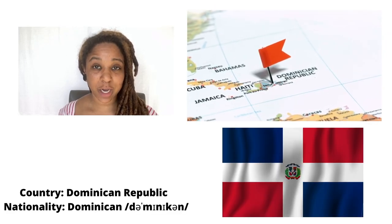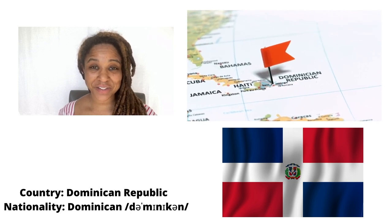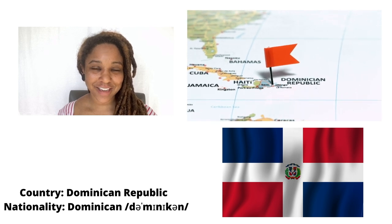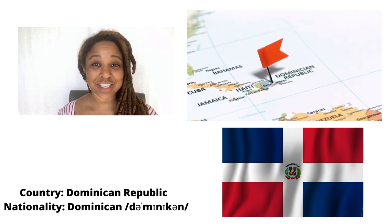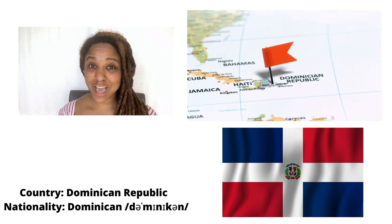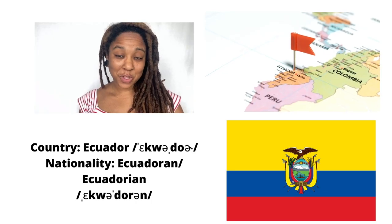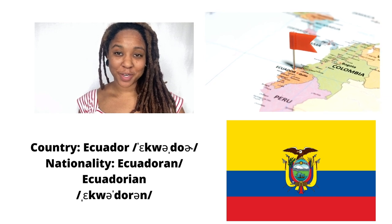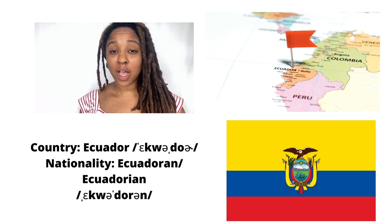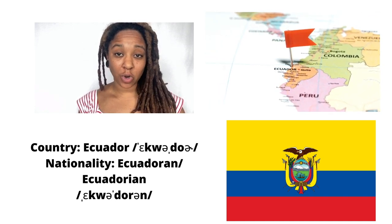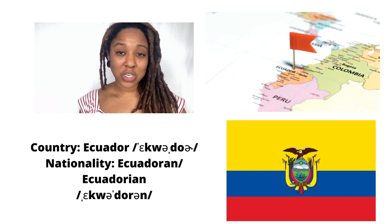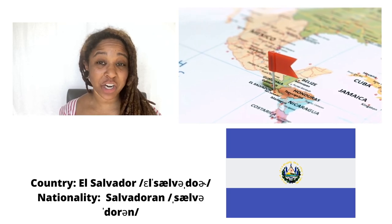Next we have the Dominican Republic. People from the Dominican Republic are also called Dominican — notice it looks like our previous island nation 'Dominica' but the demonym is pronounced differently. Another South American country: Ecuador. People from Ecuador are called Ecuadoran, and you might also hear Ecuadorian.